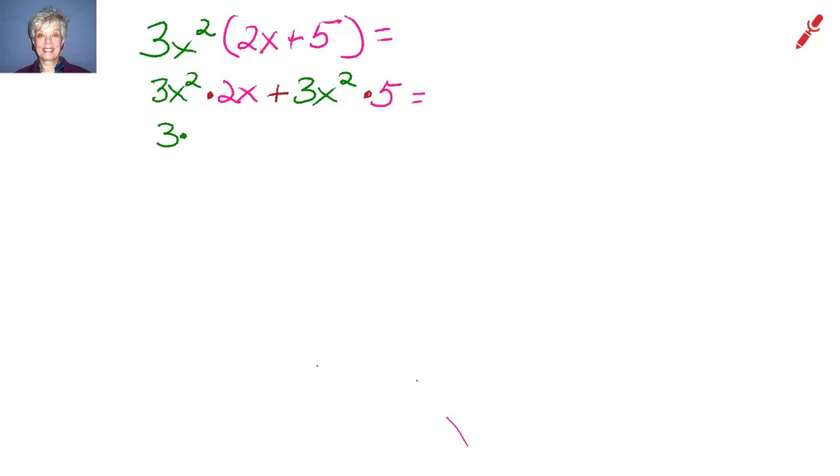So we have 3x² times 2x plus 3x² times 5. We rearrange the terms now. We have 3 times 2 times x² times x plus 3 times 5 times x².